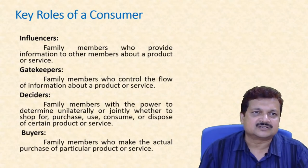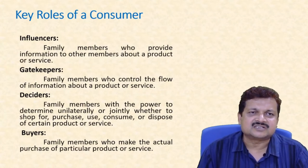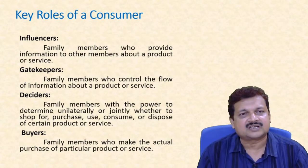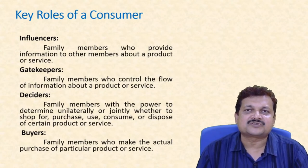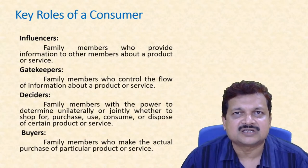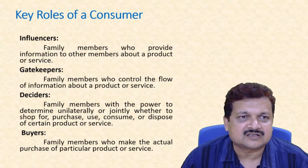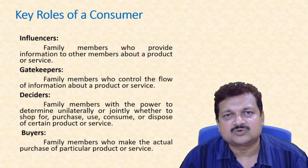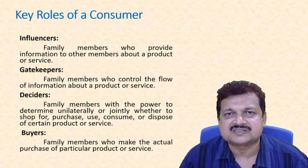Young generations often play the influencer role. Then there are gatekeepers — family members who control the flow of information. It is not always possible for influencers to influence everyone; gatekeepers control what information reaches all members. The deciders are mostly parents or the primary earners — the decision-making persons who take final decisions for different products.